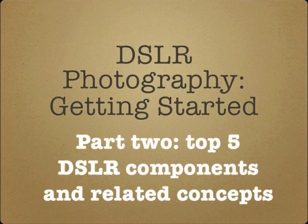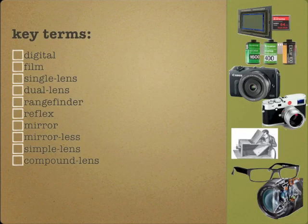All cameras have very similar basic functions, but they vary greatly in complexity and construction. These key terms will help you understand how your digital SLR camera is both similar to and different from other types of cameras.